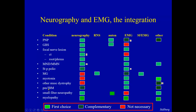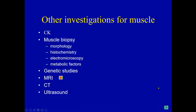IBM — inclusion body myositis, the most common of the myositides — involves similar thinking. Additional investigations that can be made include CK, muscle biopsy, genetic studies, MRI, CT, or ultrasound.